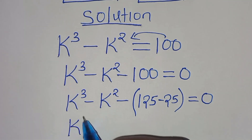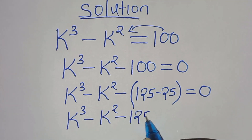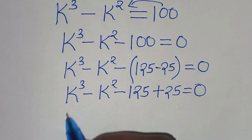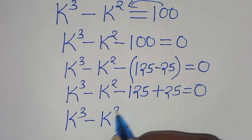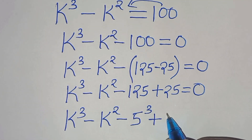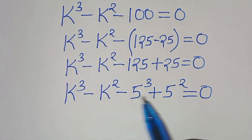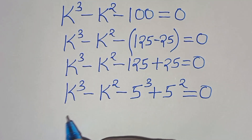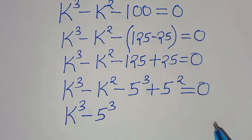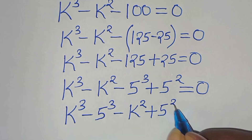So here we have k to the power of 3 minus k to the power of 2 subtract 125, then plus 25, this is equal to zero. We have k to the power of 3 subtract 125, which is 5 to the power of 3, then plus 25 which is 5 to the power of 2, equal to zero. Now we have k to the power of 3 here and 5 to the power of 3 here, and we can express this as k³ minus 5³, then minus k² plus 5², equal to zero.